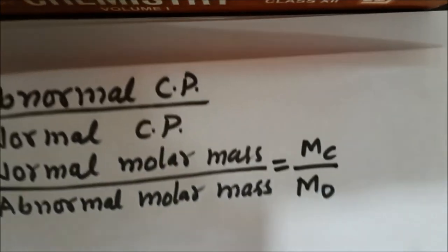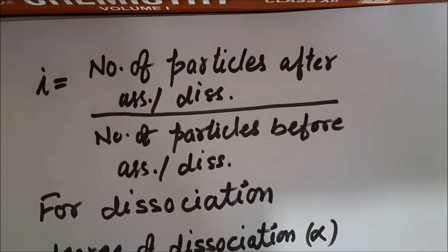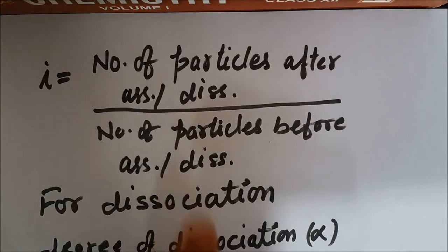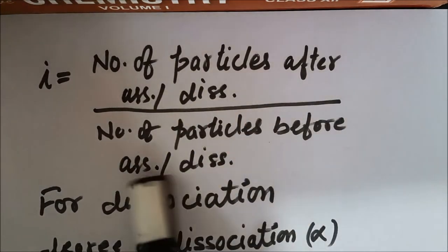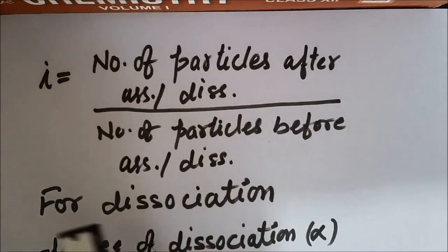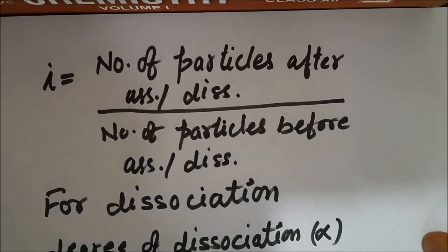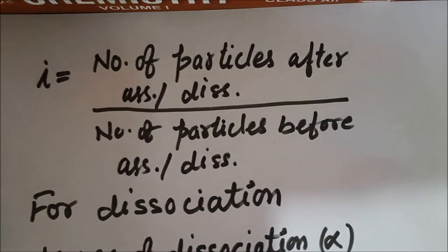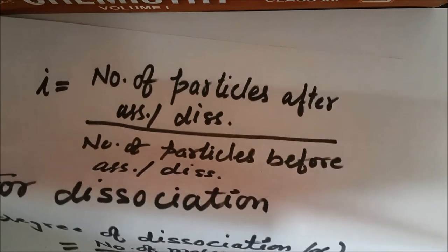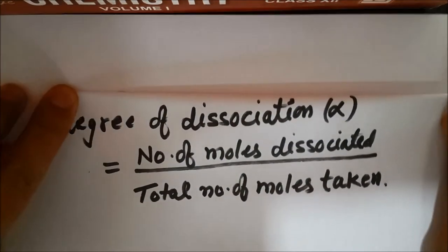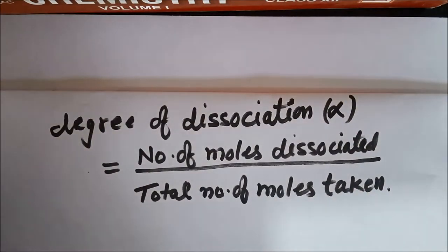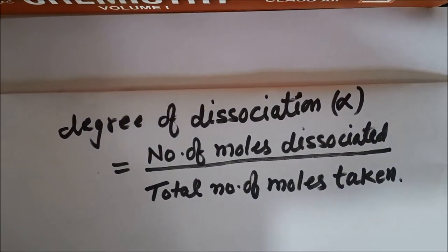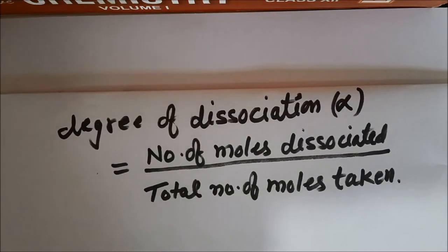The Van't Hoff factor i can also be defined as the number of particles after association or dissociation divided by the number of particles before association or dissociation. For dissociation, the degree of dissociation is defined as the number of moles dissociated divided by the total number of moles taken.